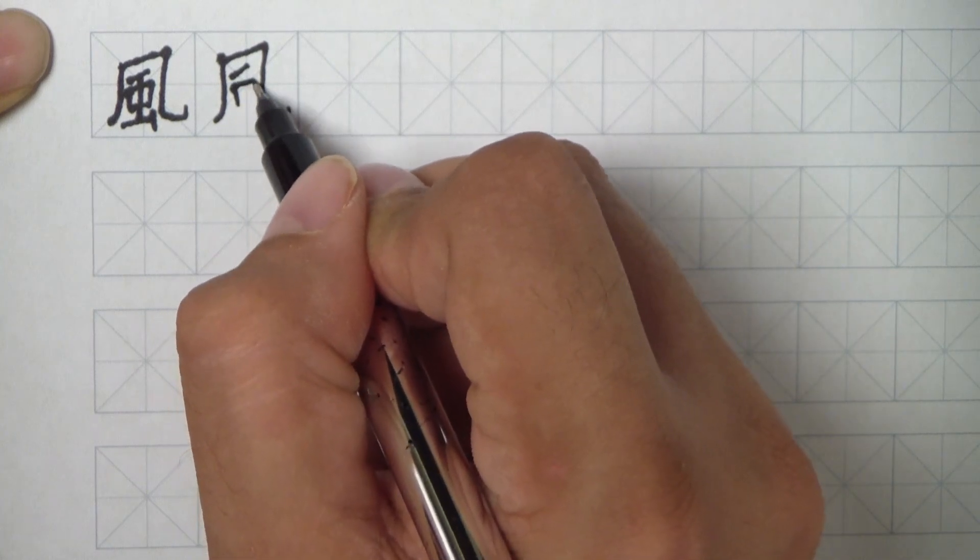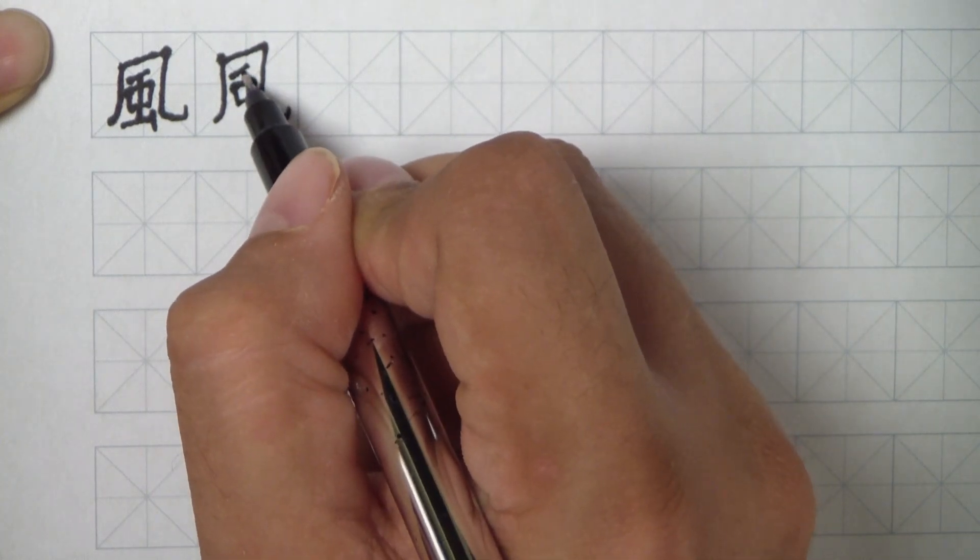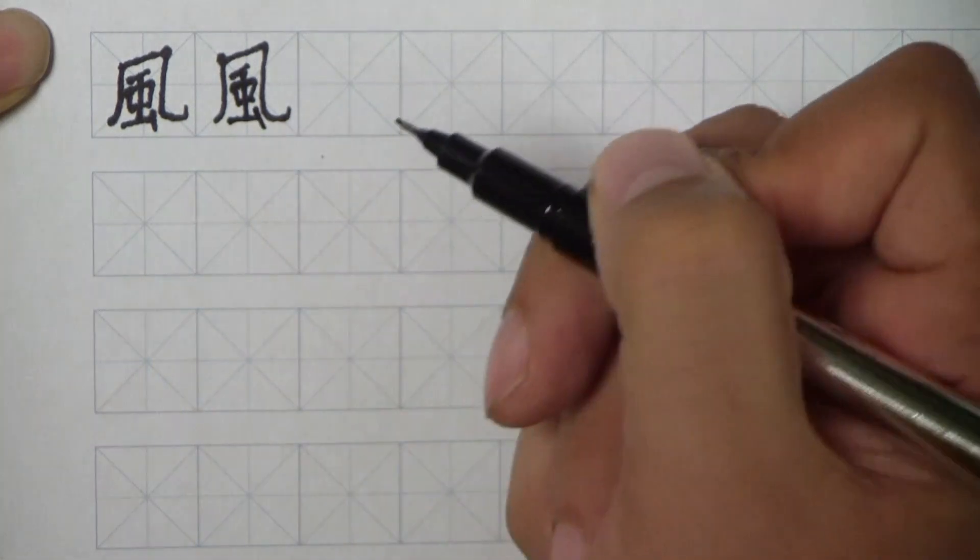the left side, and this is all one fluid stroke and do the bottom, through, over, and then the last stroke.